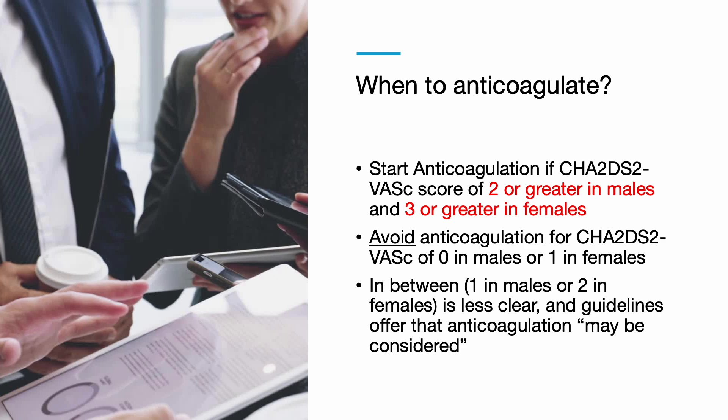The decision to prescribe anticoagulation is based on the patient's CHADS-VASc score. Current guidelines recommend anticoagulation for a score of 2 or greater in males or 3 or greater in females. Guidelines recommend against anticoagulation for a CHADS-VASc score of 0 in males or 1 in females. In between — 1 in males or 2 in females — is less clear, and guidelines offer that anticoagulation may be considered, which should prompt a risk-benefit discussion with the patient.